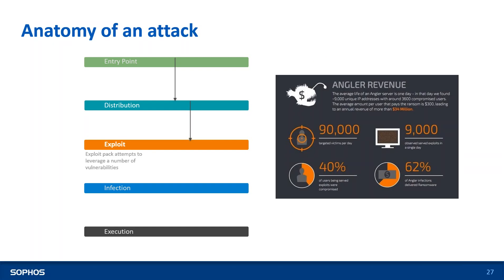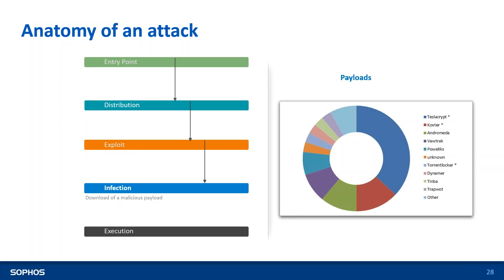The Angler exploit kit is one of the more well-known examples, targeting Flash processes — reportedly 90,000 targeted victims per day, with 40% of users being compromised. Once the vulnerability is exploited, the machine is infected with a malicious payload. Desklaska is one of the most common infection payloads, followed by a converter.